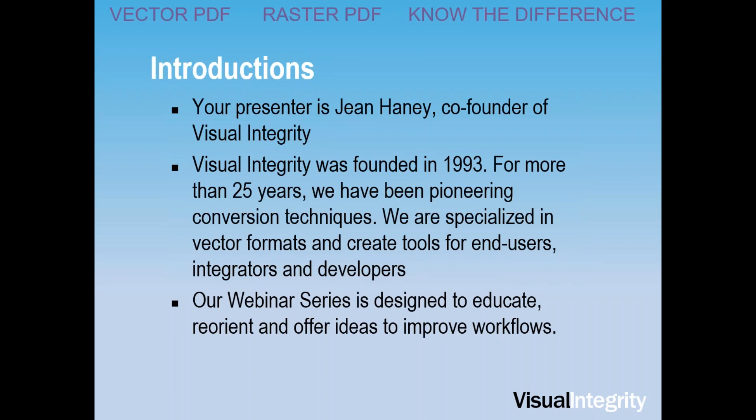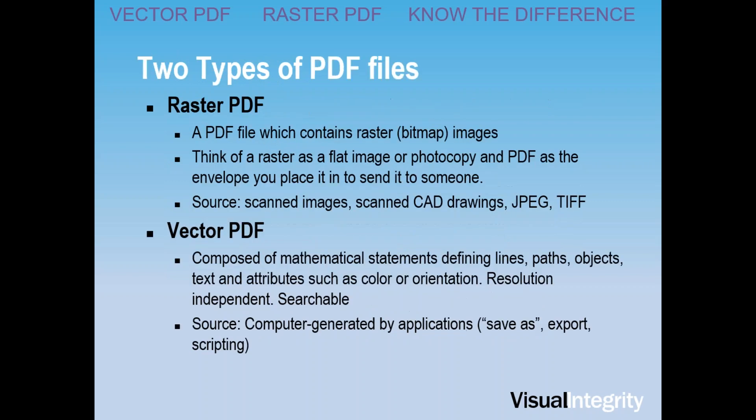Our webinar series is designed to educate, reorient, and offer ideas to improve workflows. So the two types of PDF files: the first is what we call a raster PDF. It's a PDF file which contains bitmapped images. You have to think of it as a flat image or photocopy, and the PDF is like the envelope you place it in to send it to someone — a kind of wrapper around a scanned file or a JPEG.